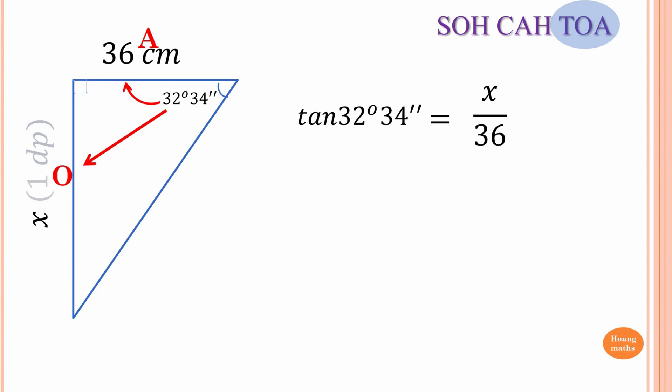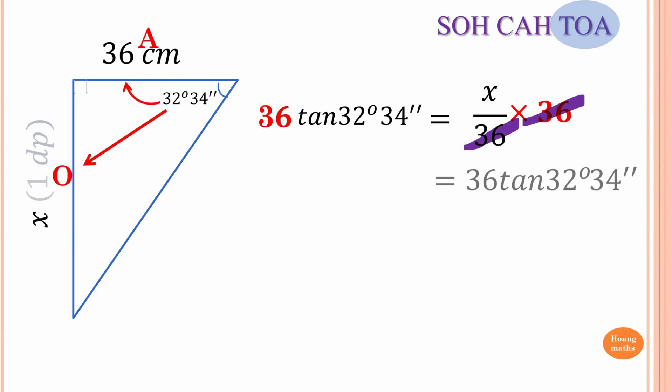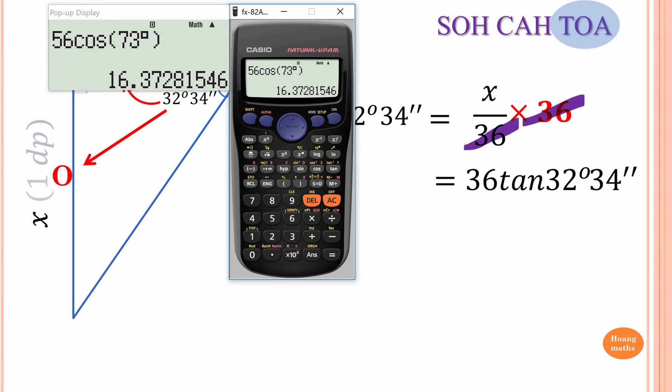Because we're solving for x and x is divided by 36, we multiply both sides by 36. So x = 36 × tan(32°34'). Now put this into the calculator.